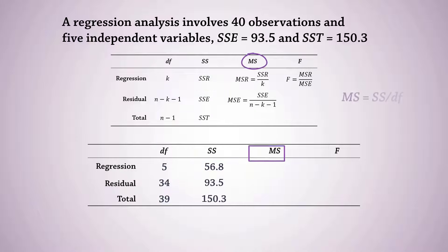Now, MS equals SS over df. So MSR equals 56.8 divided by 5, which gives 11.36. And MSE is 93.5 divided by 34, which gives 2.75. The F statistic is MSR over MSE, which gives 4.13. The ANOVA table is now complete.